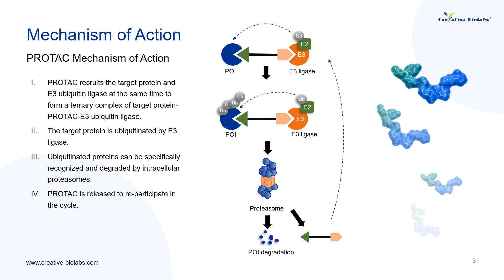Inspired by the ubiquitin-proteasome system in eukaryotic cells, scientists designed PROTAC to hijack the ubiquitin-proteasome system and degrade the target protein. PROTAC recruits the target protein and E3 ubiquitin ligase at the same time to form a ternary complex of target protein, PROTAC, and E3 ubiquitin ligase, which makes the target protein ubiquitinated by E3 ligase. Ubiquitinated proteins can be specifically recognized and degraded by intracellular proteasomes, while PROTAC is released to re-participate in the cycle.